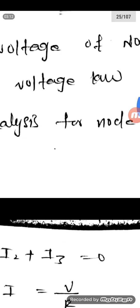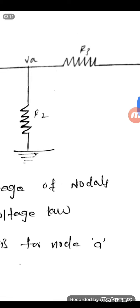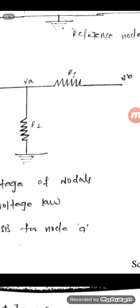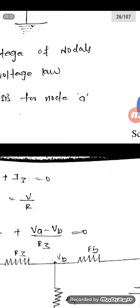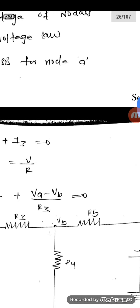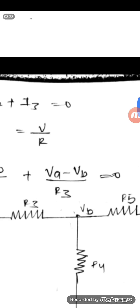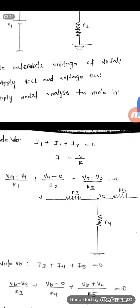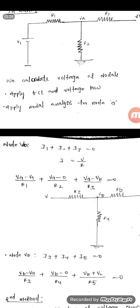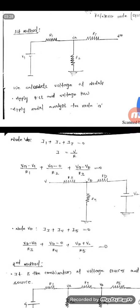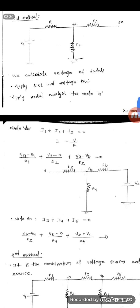What is I3? The potential difference between VA and VB by R3. So here (VA − VB) / R3 = 0. This is the nodal equation for node A.